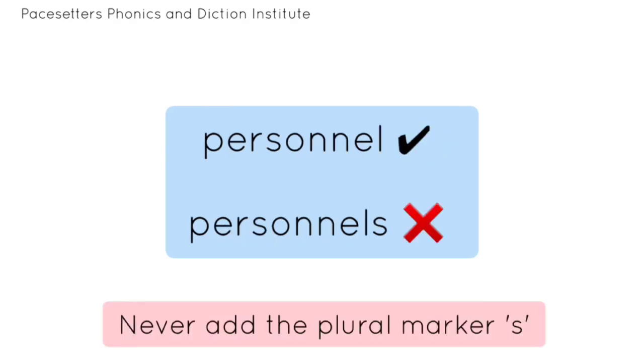Personnel. Personnel is spelled P-E-R-S-O-N-N-E-L. Never add the plural marker 's'.